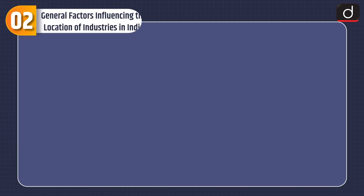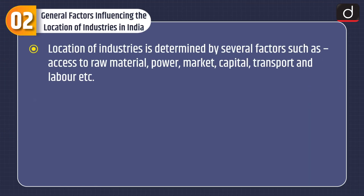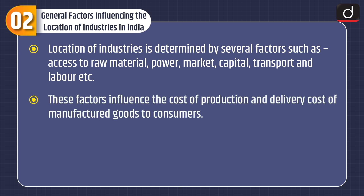Now let's discuss general factors influencing the location of industries in India. Location of industries is determined by several factors such as access to raw material, power, market, capital, transport, and labor. These factors influence the cost of production and delivery cost of manufactured goods to consumers.